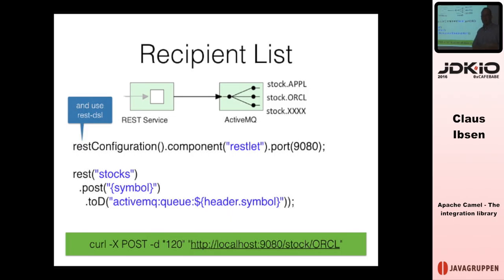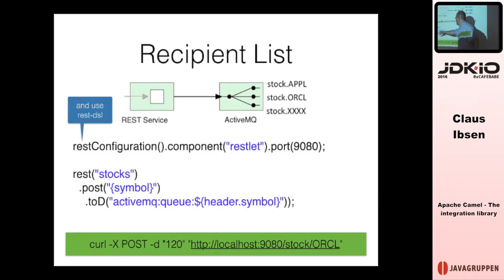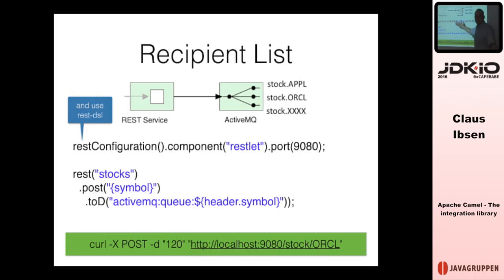Speaking of REST, Camel introduces a REST DSL so you can define REST services using REST verbs. You define a REST service at '/stocks' where you can do a POST with a symbol and send it to a queue. You configure the REST DSL outside the route — for example, using the Camel Restlet component on port 9080. The REST DSL supports many different Camel components as the HTTP transport: Restlet, Jersey, Servlet, Netty, and a few others.